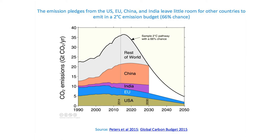We have 400 gigatons carbon to distribute. If we want to limit climate change to two degrees, how are we going to distribute it between different countries? This is how it works for the Paris accord. If you take the U.S. pledge, the pledge from Europe, the pledge from India, the pledge from China — you can see that the rest of the world has no emissions. So how are we going to distribute these emissions equitably if we want to stay under two degrees?